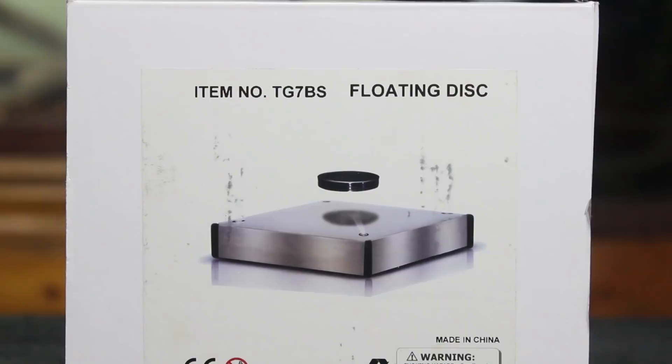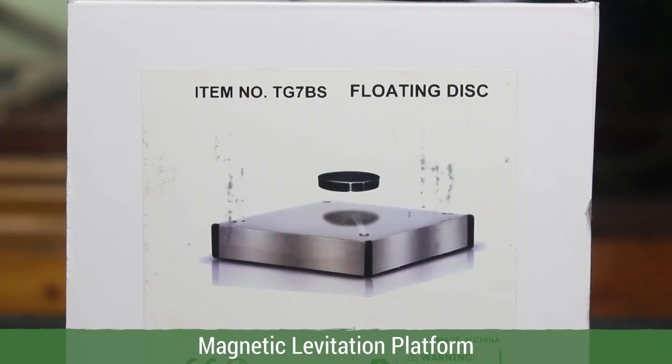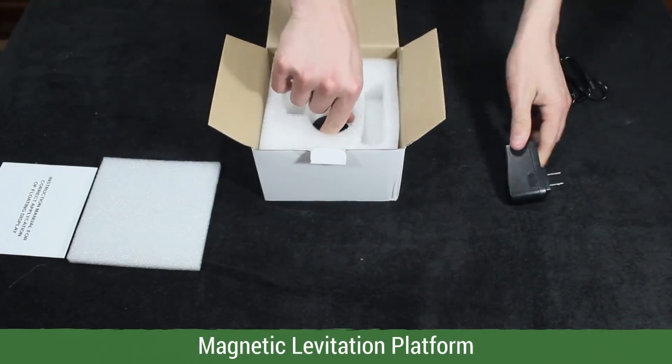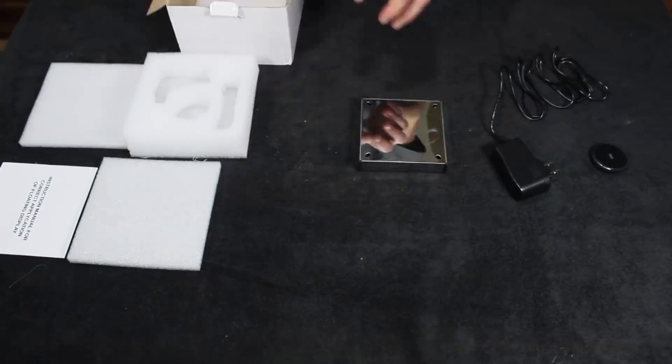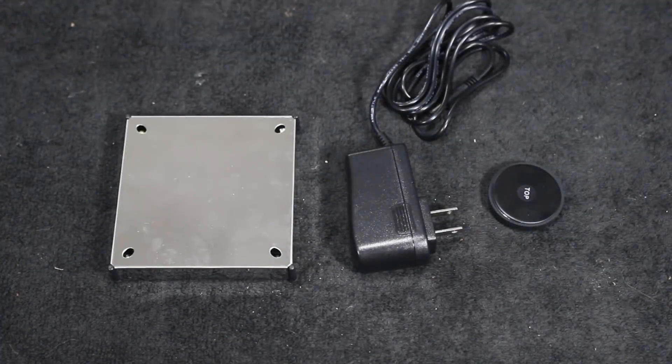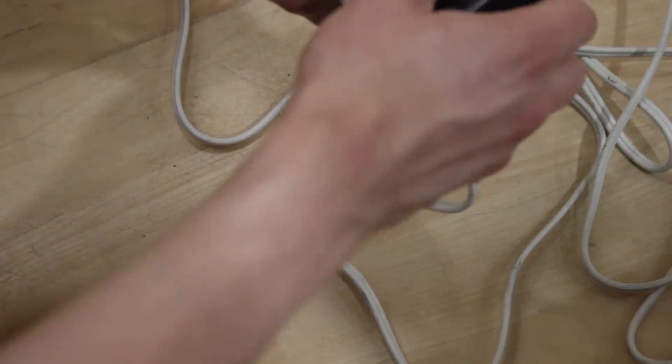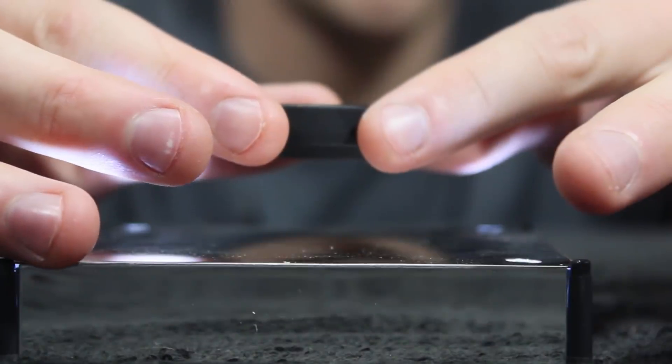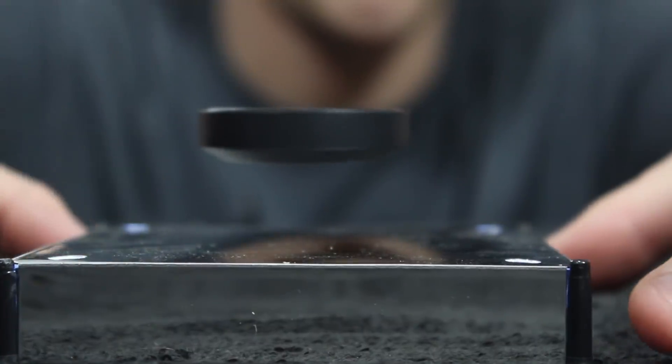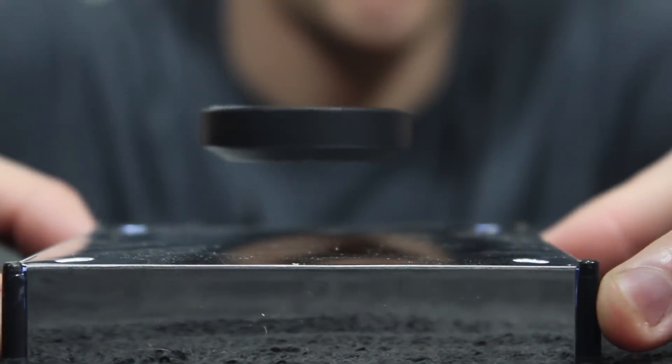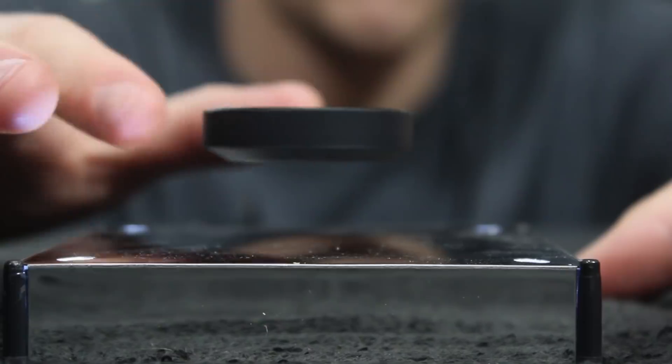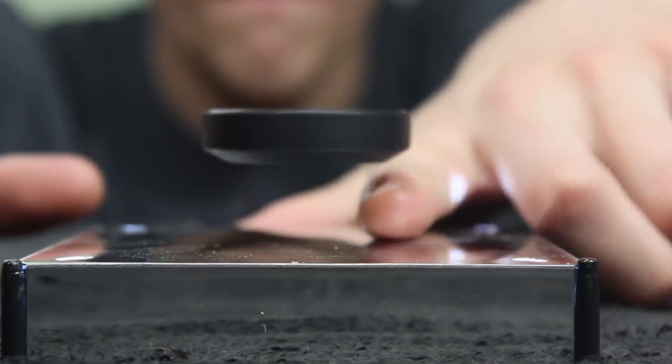The first component for this build is a levitation platform. This essentially uses maglev technology to suspend a magnetic disc above the main platform. That said, we will modify this device in order to levitate a terrarium.